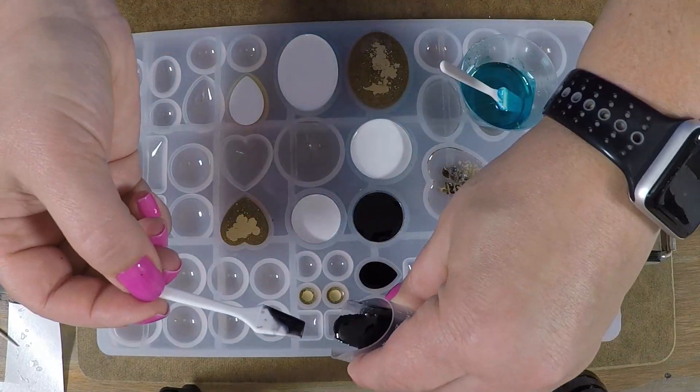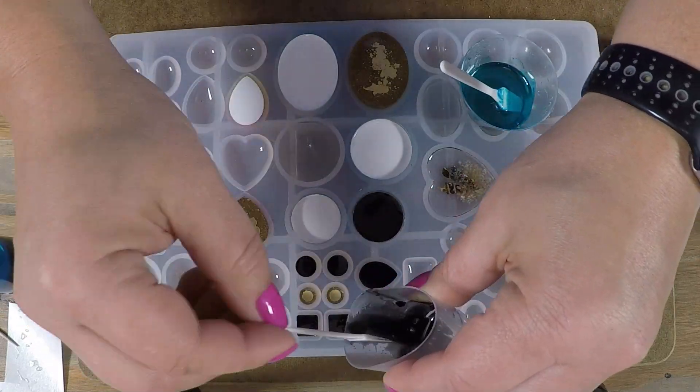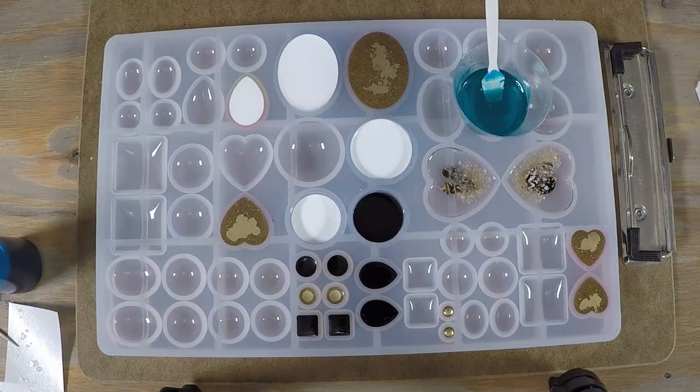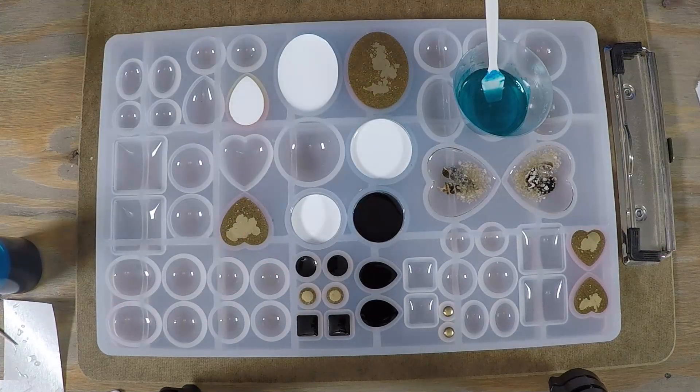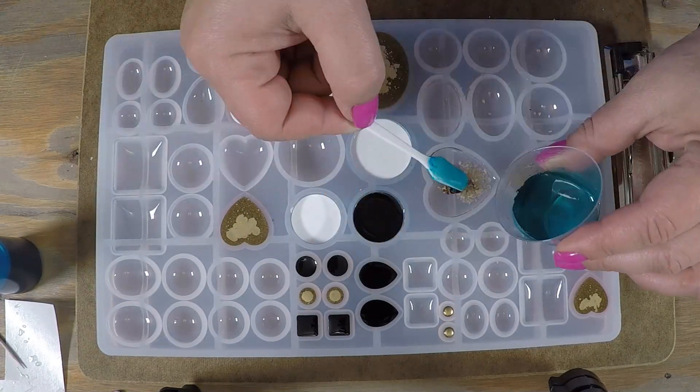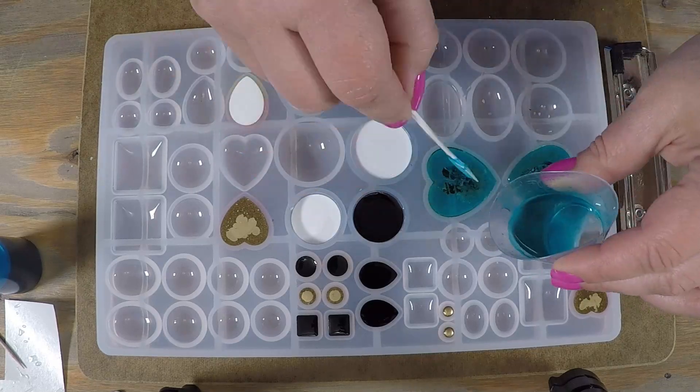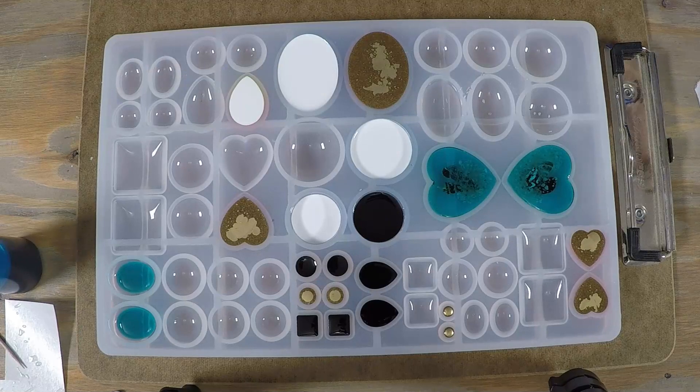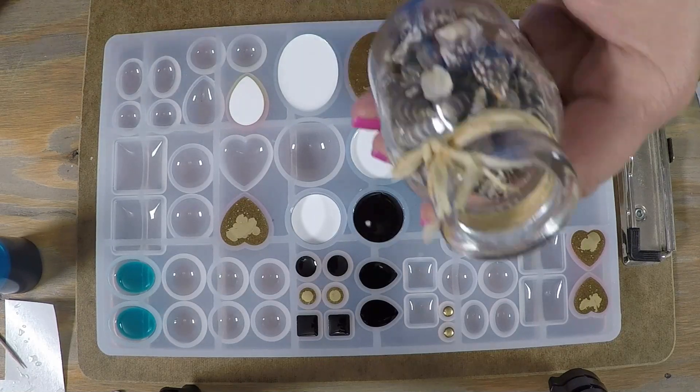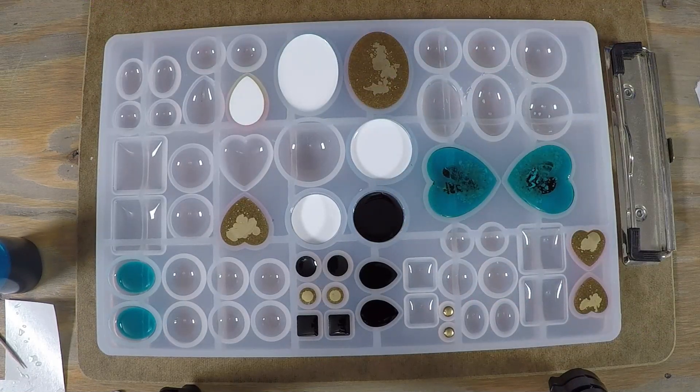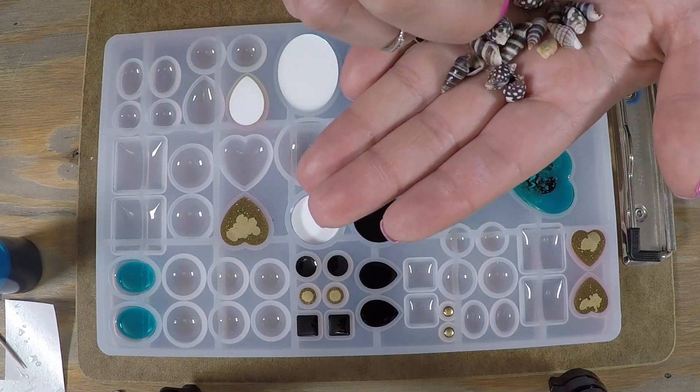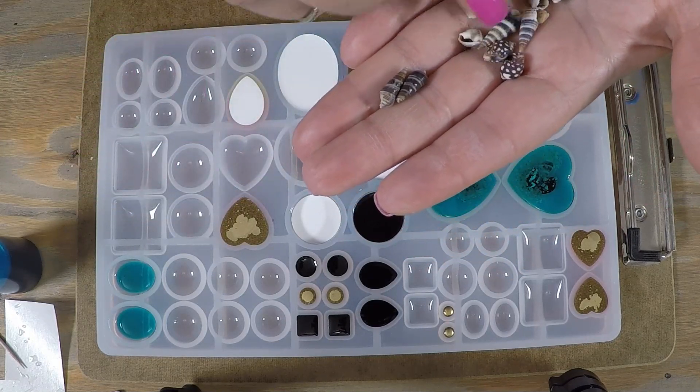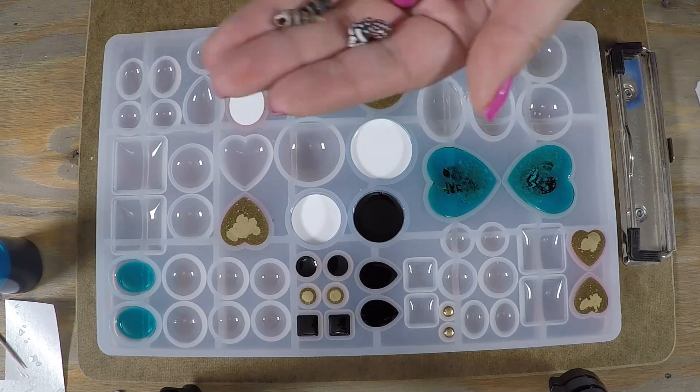I grabbed some Baja Blue alcohol ink and put it in this applicator bottle with a smaller tip—it sometimes helps control the ink a little bit better. I just put a few drops in to keep it transparent, then let that sit for a little bit. Finished off the black in some extra empty cavities.